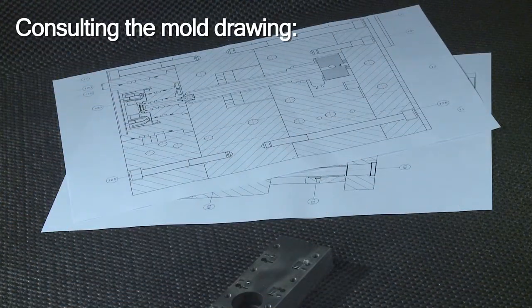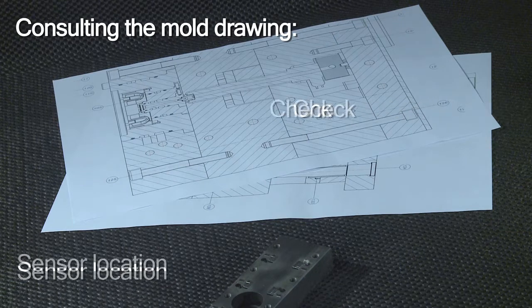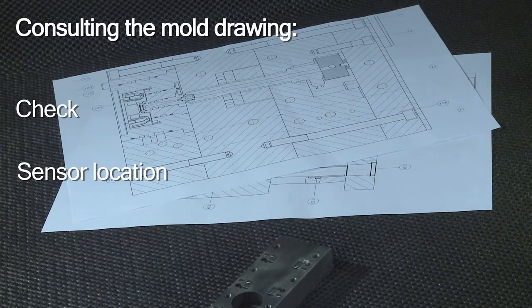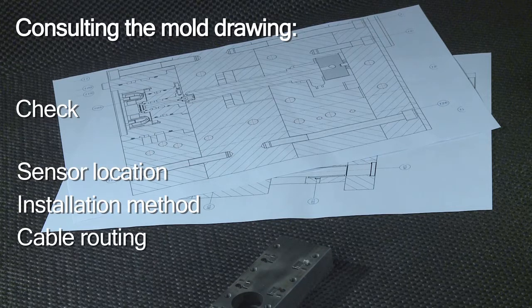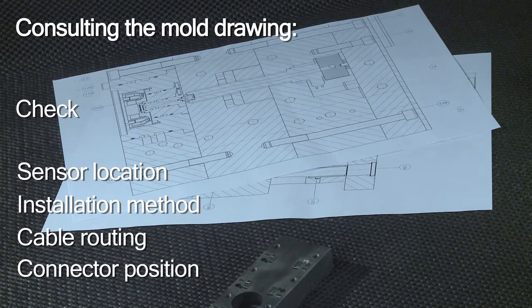Next, you should consult your mold drawing and check that the sensor location is precisely identified, that using a mounting nut is the appropriate installation method, that the cable routing is clearly evident, and that the exact connector position is marked.